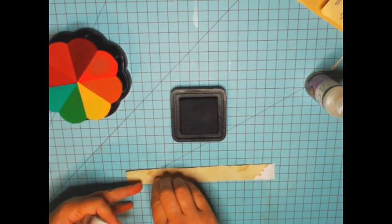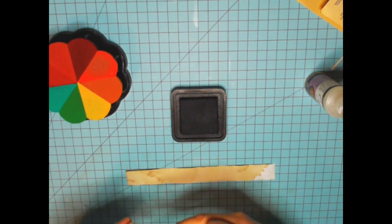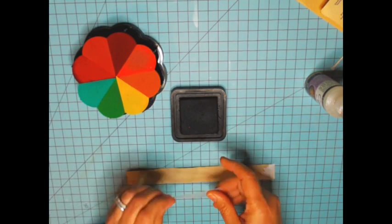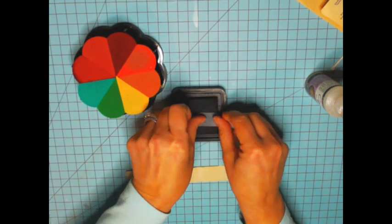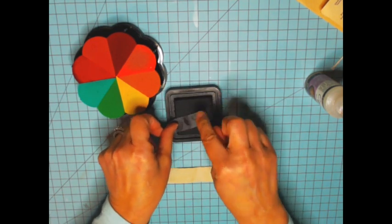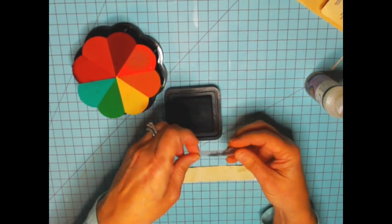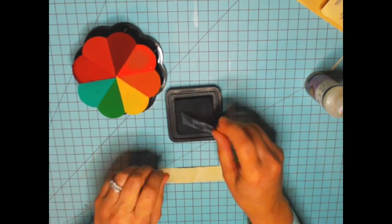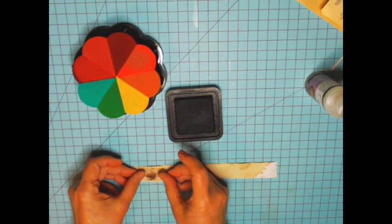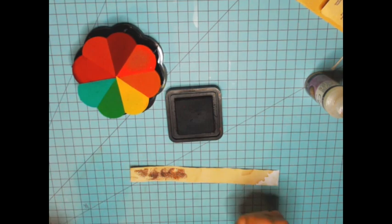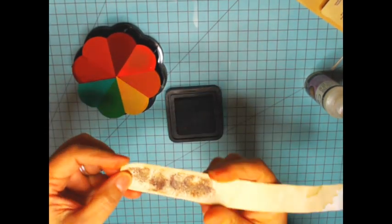I wondered if it would still adhere to the paper. And it does. So you can take tape and you can use any color that you want. Here I'm using vintage photo. You can just kind of press it down on the ink pad and then put it on your project.